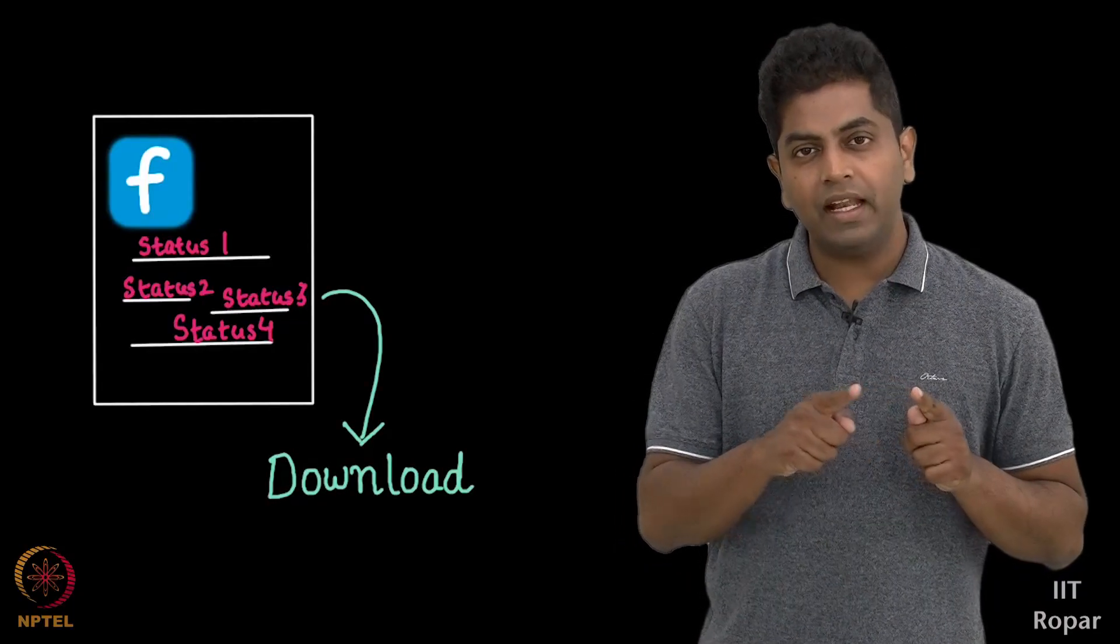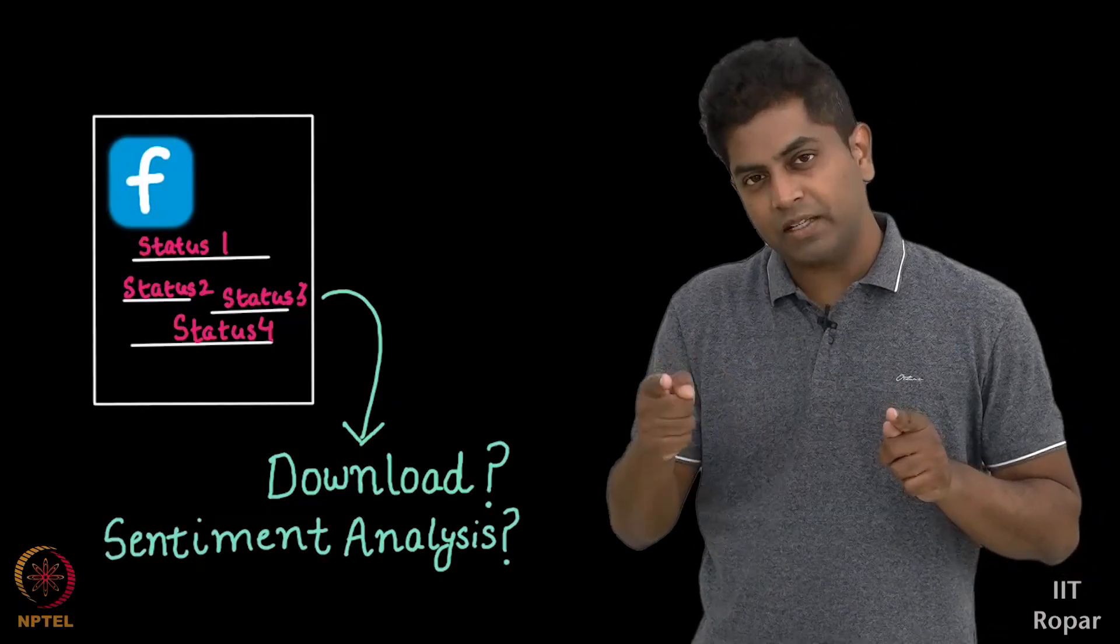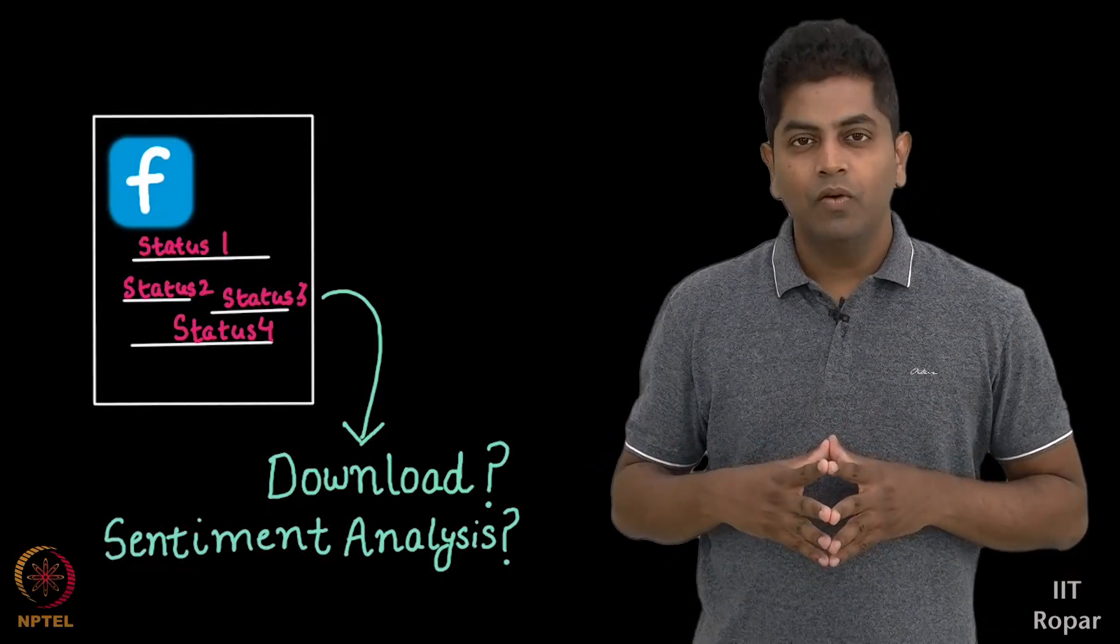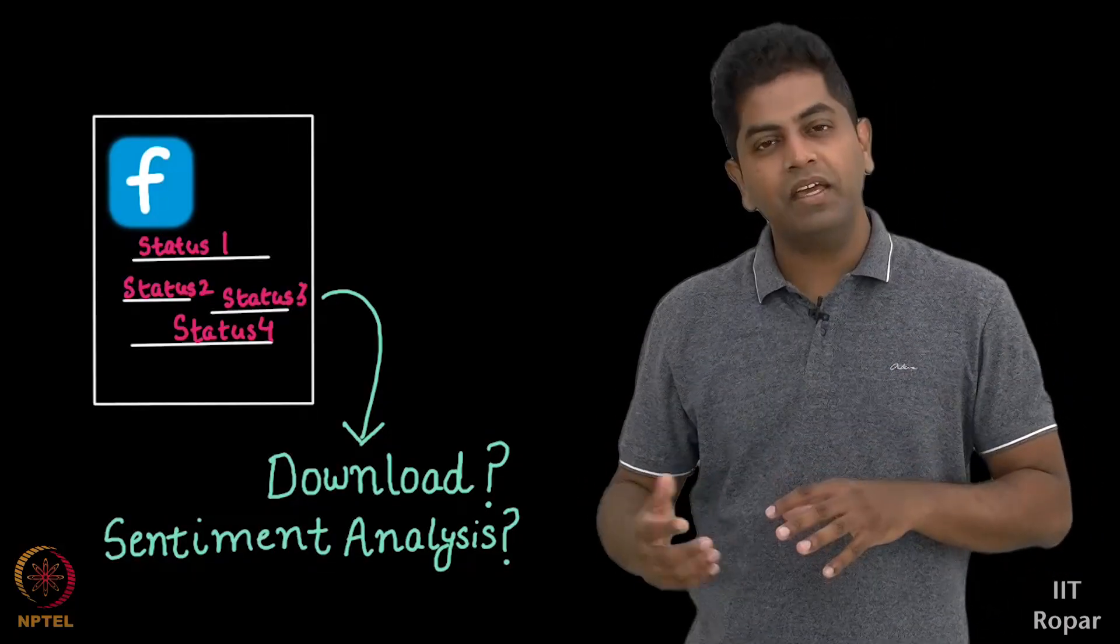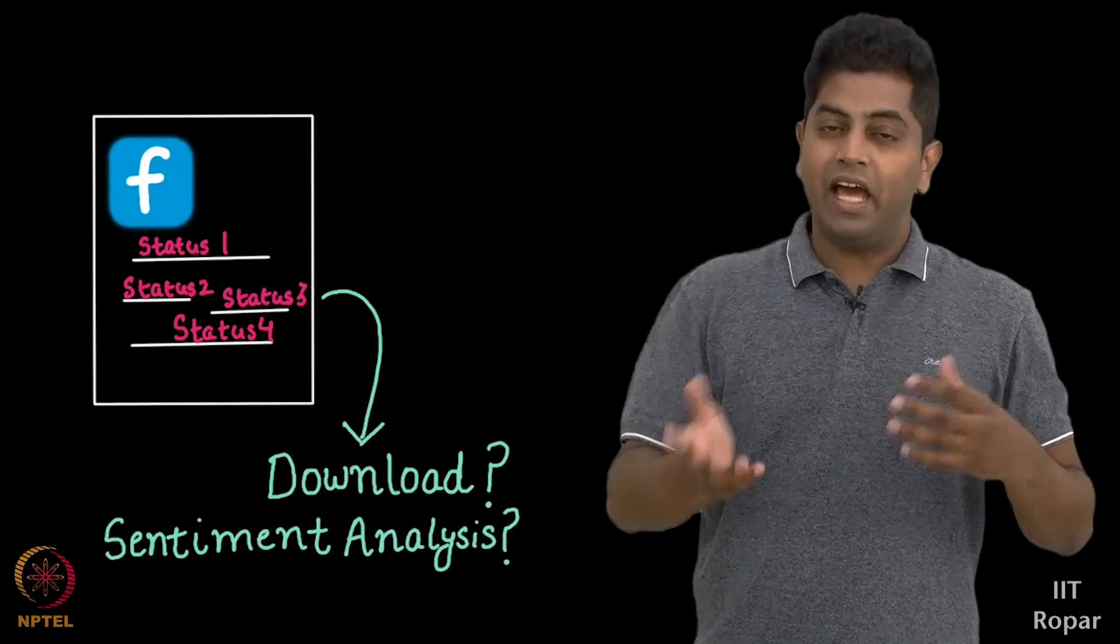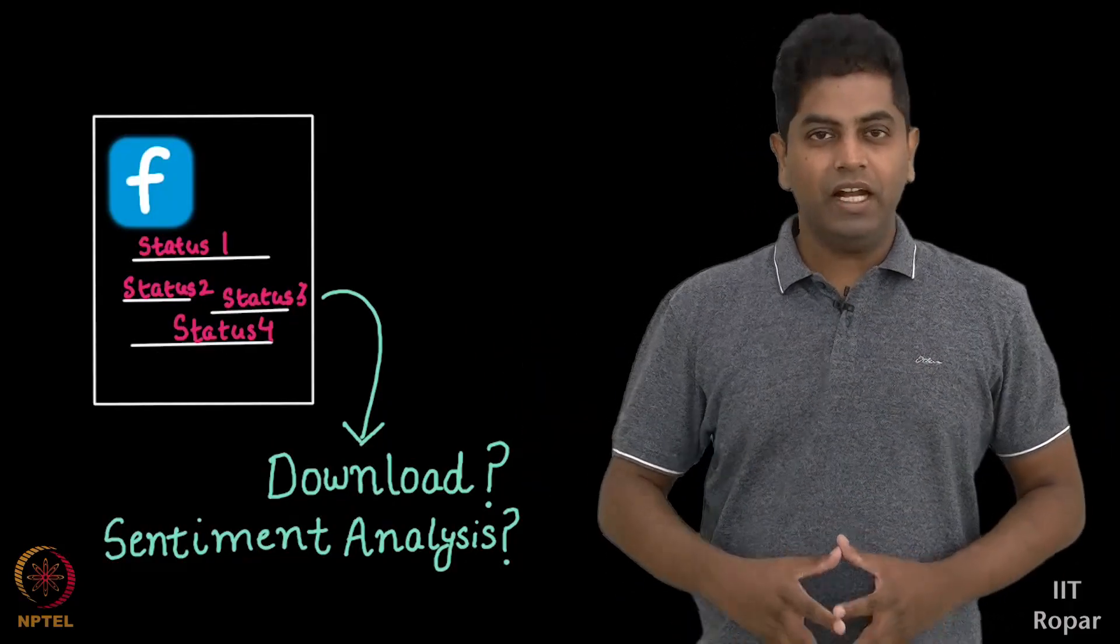So what I would like to do is download all my status updates and try to analyze all of them by looking at the sentiments of individual status updates and see which are the months I was more happy than unhappy and months where I was unhappier than happier, times when I was neutral and so on.